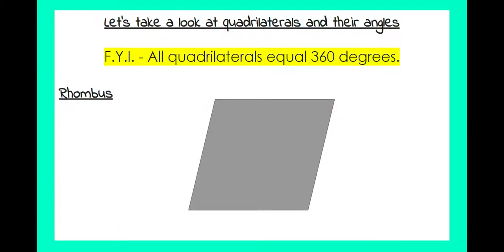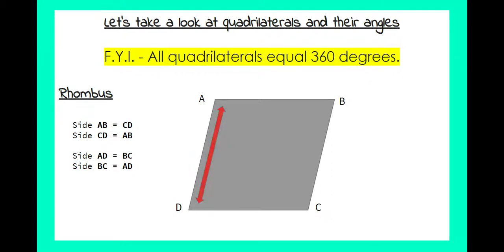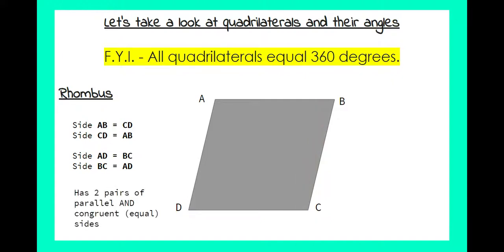Next we have a rhombus, with angles A, B, C, and D. Side AB is equal and parallel to side CD, and in reverse CD is equal to AB. Side AD is equal to BC, and BC is equal to AD in parallel. Notice that a rhombus has two pairs of parallel and congruent — also equal — sides.